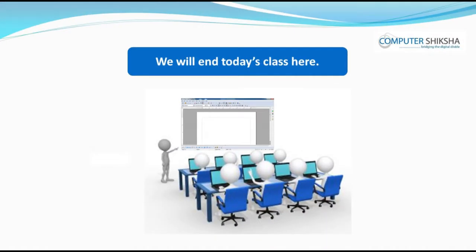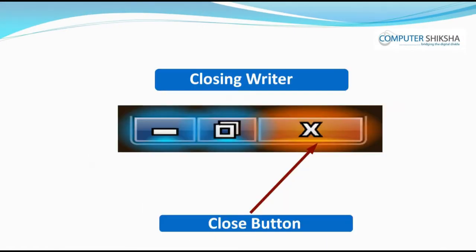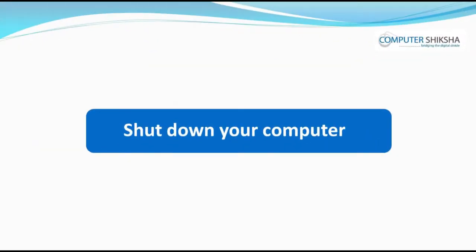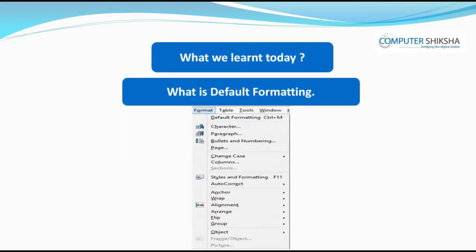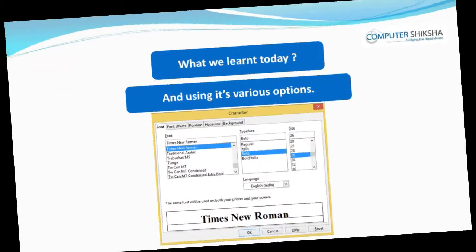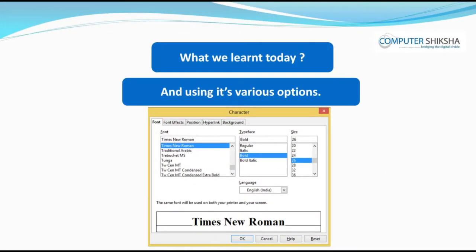We will end this lesson here for today. Close your writer file and properly shut down your system. In today's class, you learned about some of the options of the format menu like default formatting, and also about the character submenu and its various options. Thank you.